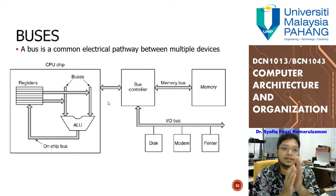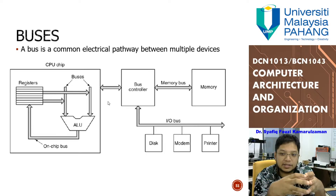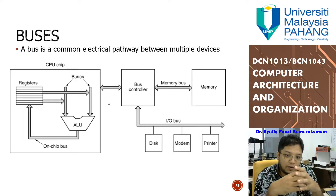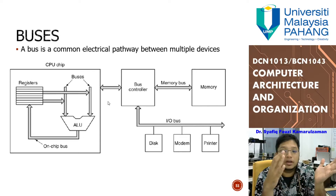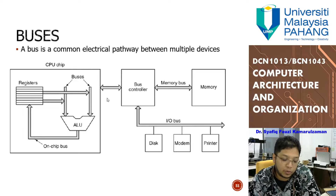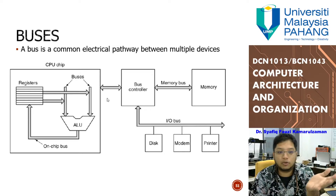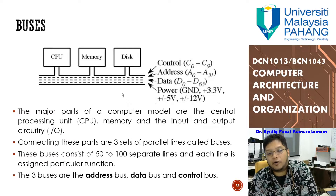A bus is basically a pathway between multiple devices. Inside your CPU itself there are buses, and outside the CPU on the motherboard there are their own buses as well. Because they are integrated circuits, the internal CPU buses are interconnected in more detail and are sometimes even faster than the motherboard system bus. For main memory to CPU communication we have a dedicated memory bus, and for external equipment we have the I/O bus.